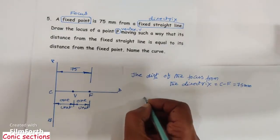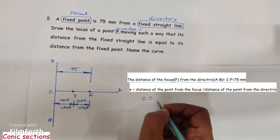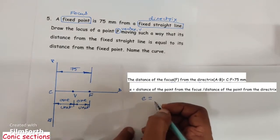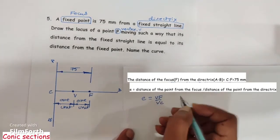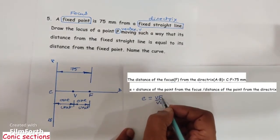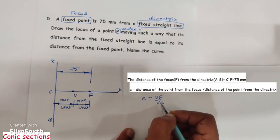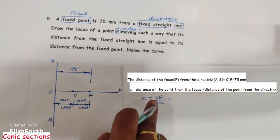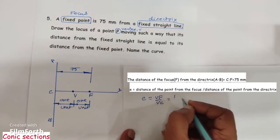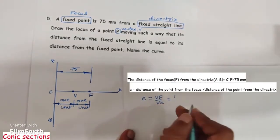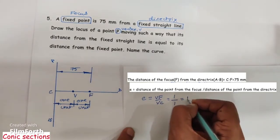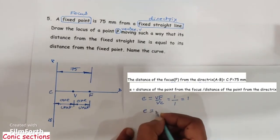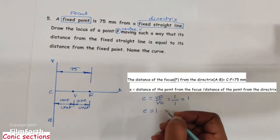Eccentricity e is a ratio of the distance of the point from focus by the distance of the point from directrix. So e equals VF by VC, that is the distance of the vertex from focus by the distance of the vertex from directrix. Here the distance of the vertex from focus is equal to 1 unit and the distance of the vertex from directrix is equal to 1 unit, so e equals 1 by 1, which equals 1.